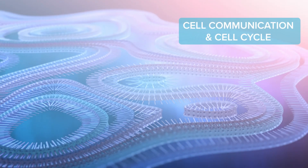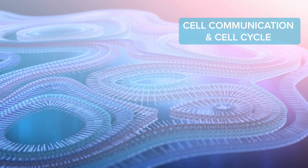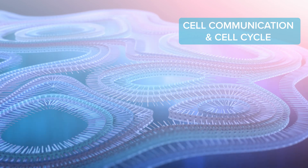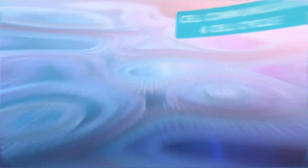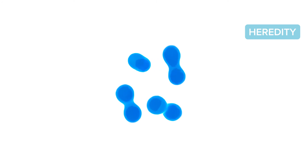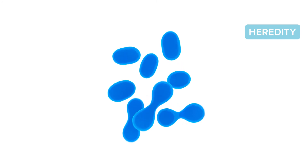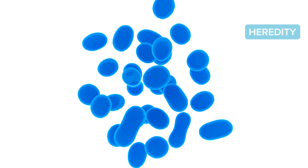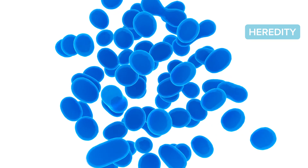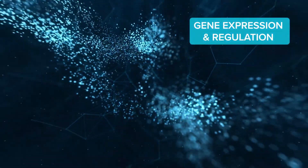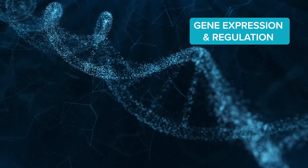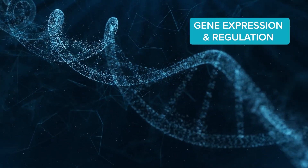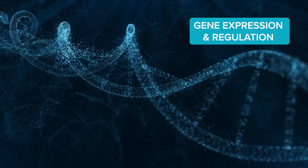Cell communication and cell cycle, which is where you discovered the role of cells, how they communicate, and how they support life. Heredity, which included the genetic and cellular processes that occur in reproductive events and how they shape future generations. Gene expression and regulation, and how the structure and roles of DNA and RNA impact the physical genotype of individual organisms.